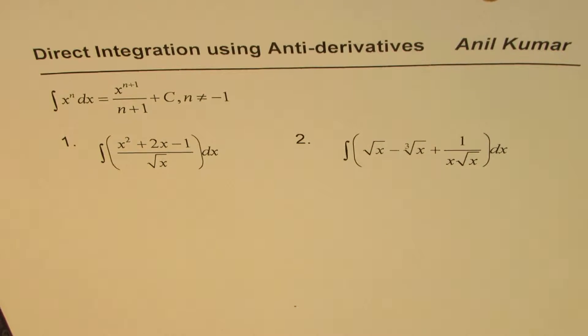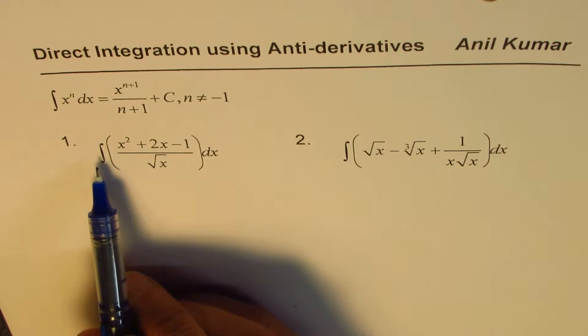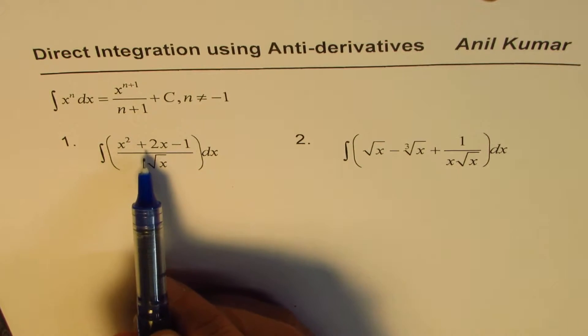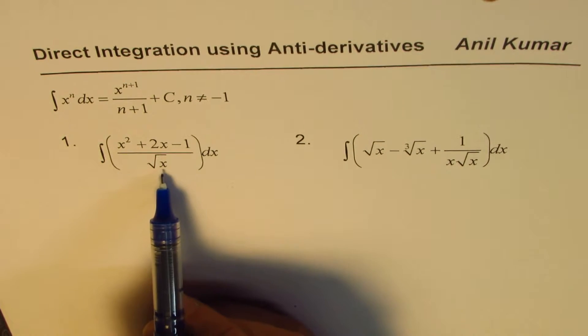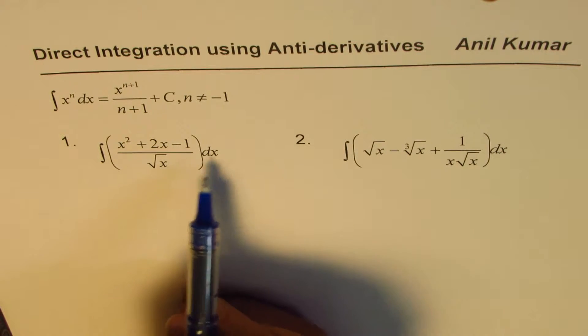Okay, so here are two examples. You can always pause the video, copy the question, answer, and then look into my suggestions. The first one is you need to find integral of x squared plus 2x minus 1 divided by square root of x dx.